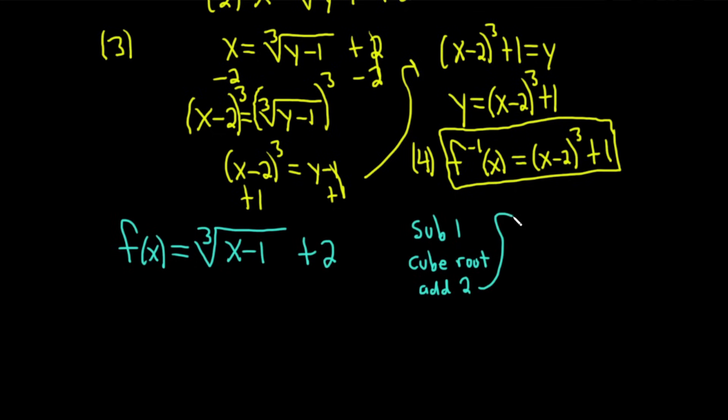So let's undo that in reverse order. What's the opposite of adding 2? Well that's subtracting 2. The opposite of cube root is cubing. And the opposite of subtract 1 is add 1.